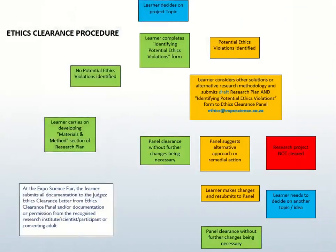This is the ethics clearance procedure. Once you have a topic, the first step is to complete the Identifying Potential Ethics Violations form. If no ethics risks are identified, continue with your research. If you identify any potential ethics violations, complete the Identifying Potential Ethics Violations form. Email this form with your draft research plan to the Expo Ethics Clearance Panel using ethics@exposcience.co.za.